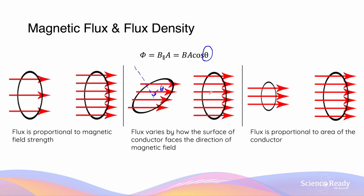For the second conductor, the angle is between the normal and the direction of the magnetic field. The angle here is zero degrees because the normal in blue is parallel to the direction of the red field lines. So the flux varies depending on how the surface of the conductor is oriented with respect to the direction of the magnetic field.